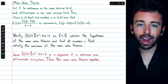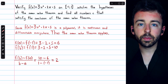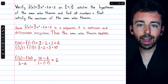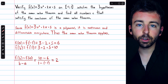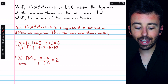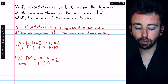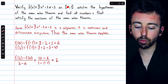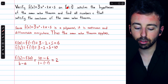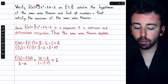Now let's find that number. In order to find where the derivative is equal to the average rate of change, we first need to find what the average rate of change is. So let's calculate f of a and f of b. f of a is f of negative one — that's the starting point of the interval.